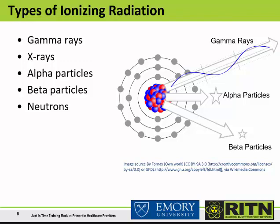After an IND detonation, the most important way patients become exposed to radiation is from gamma rays emitted during the detonation itself or from radioactive fallout. Radioactive material can also deposit on the skin; in these cases, high-energy beta particles can irradiate the skin and lead to superficial skin burns, referred to as beta burns.